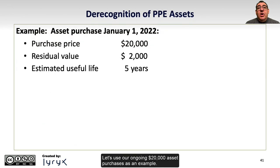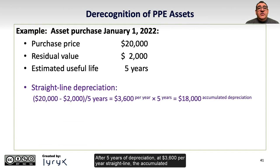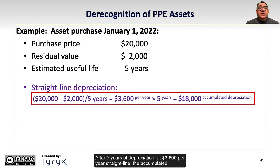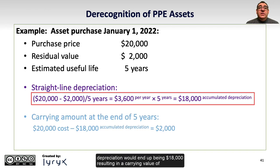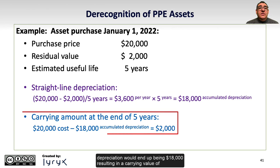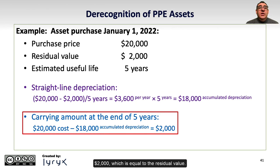Let's use our ongoing $20,000 asset purchase as an example. After five years of depreciation at $3,600 per year straight line, the accumulated depreciation would end up being $18,000, resulting in a carrying value of $2,000, which is equal to the residual value.